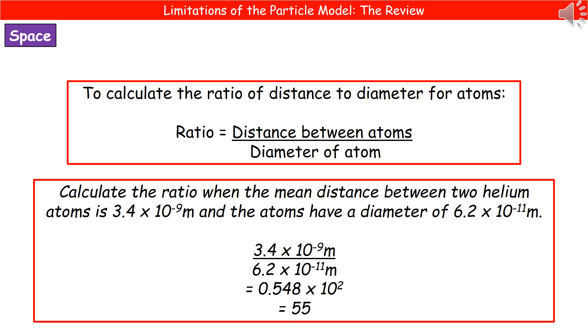To give you an example of the kind of question you could see: calculate the ratio when the mean distance between two helium atoms is 3.4 times 10 to the minus 9 meters and the atoms have a diameter of 6.2 times 10 to the minus 11 meters.